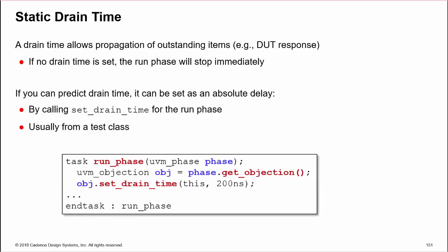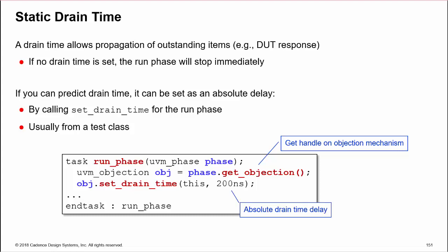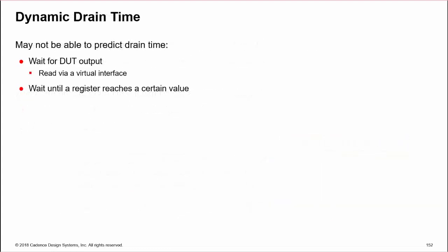If we can predict our required drain time, it can be set as an absolute delay. In a run phase task, we get a handle on the objection mechanism by calling get_objection off the phase argument, and then we call set_drain_time from the objection handle. The method takes two arguments, a reference to the object specifying the drain time, we use the keyword this, and a time value. So that's easy.